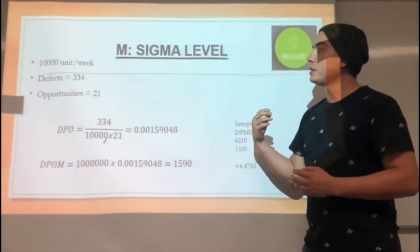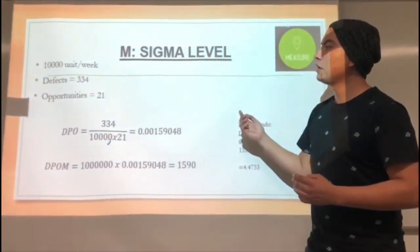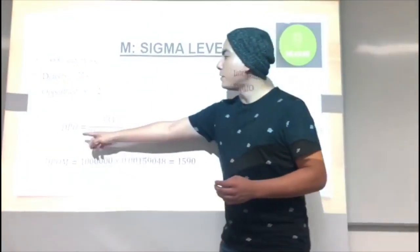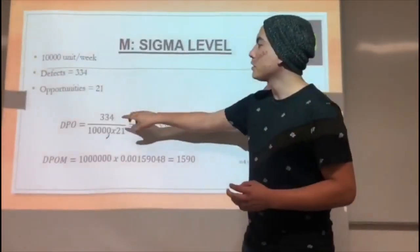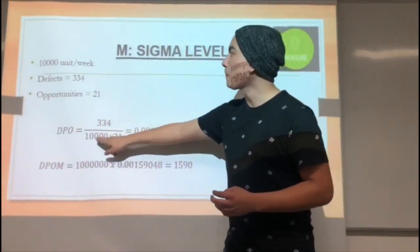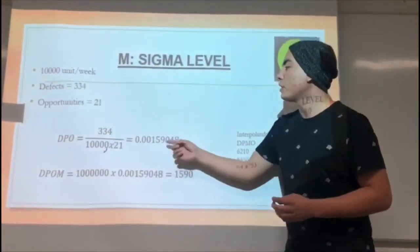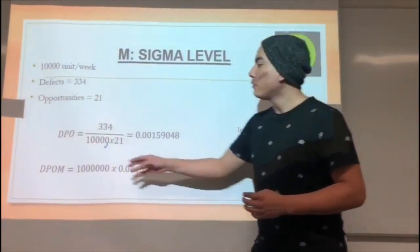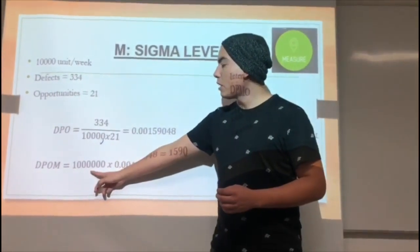From our flux chart, we have inevitable steps that result in 21 opportunities. If we calculate the defects per opportunity, we have to divide the defects by the units produced by the opportunities, and finally we get this amount.